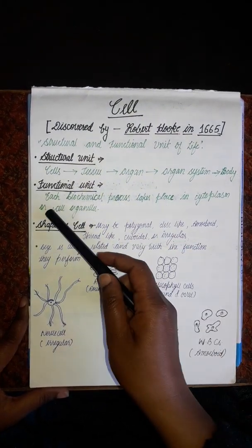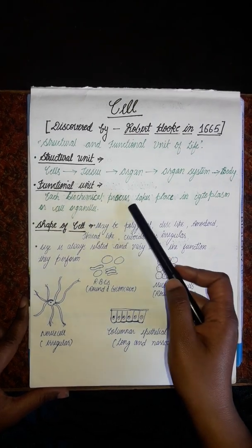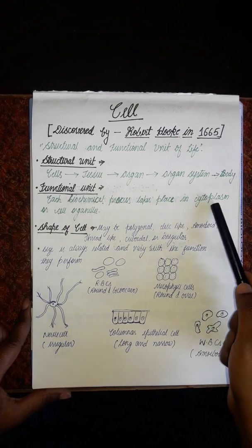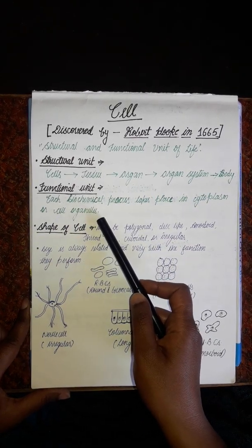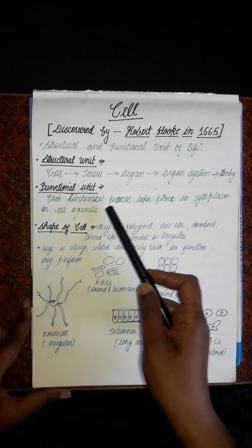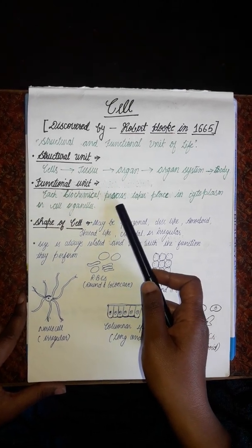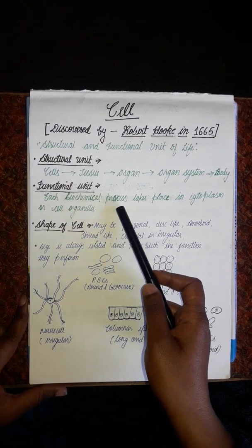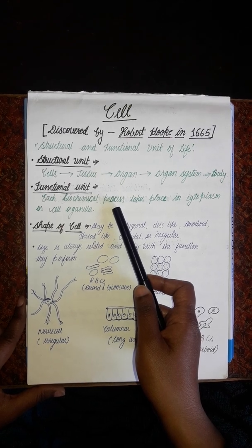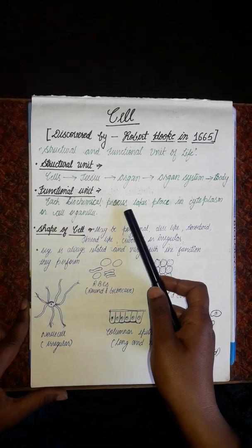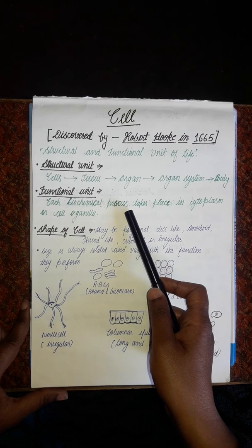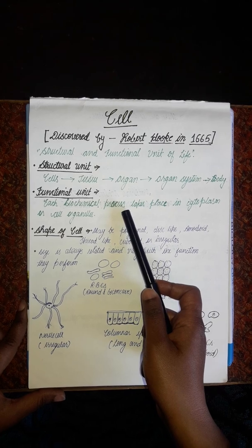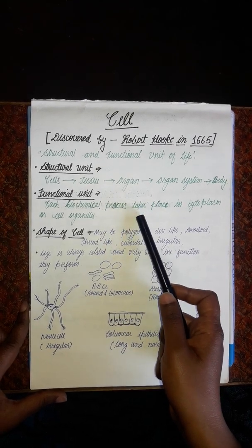How is the cell the functional unit of life? Each biochemical process takes place in the cytoplasm or cell organelles. Biochemical processes are all the chemical processes which take place inside a living body — like respiration, which is the breakdown of food, and photosynthesis, which is the preparation of food by green plants.